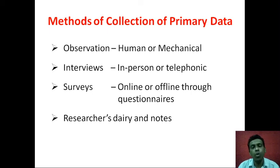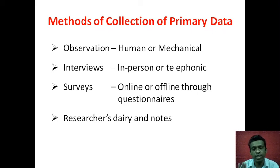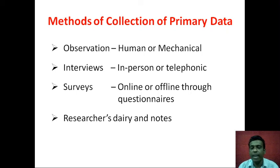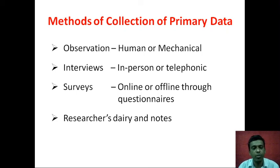The third method is surveys, which can be online or offline. During the lockdown, many online surveys were conducted — feedback forms or questionnaires filled by respondents. An online form such as a Google Form can be emailed, or an offline printed questionnaire can be handed over for the respondent to tick mark and answer. Questionnaires are essentially feedback forms, and we will discuss them in more depth in further modules.